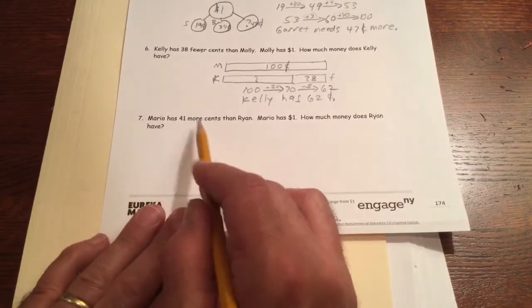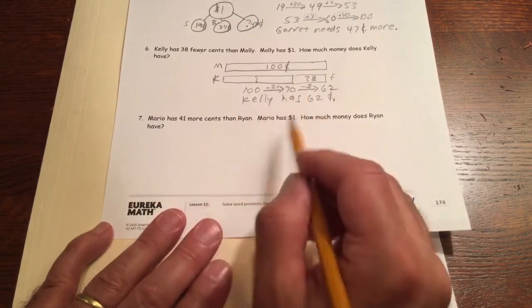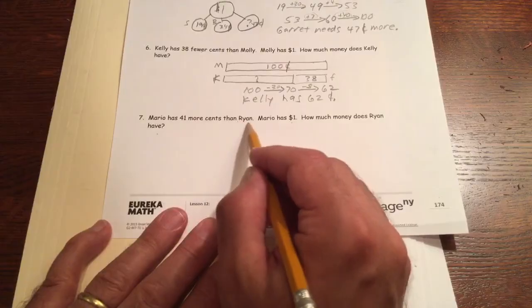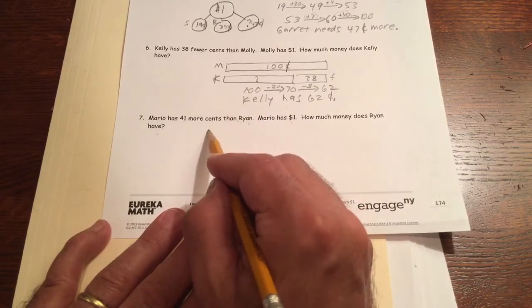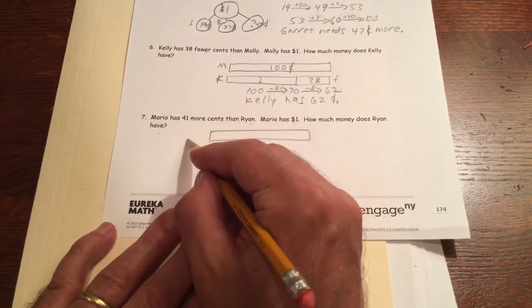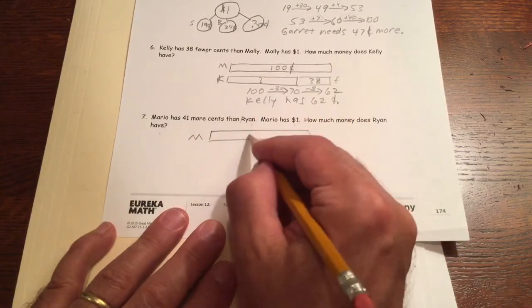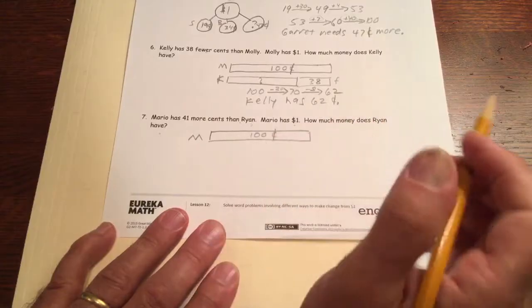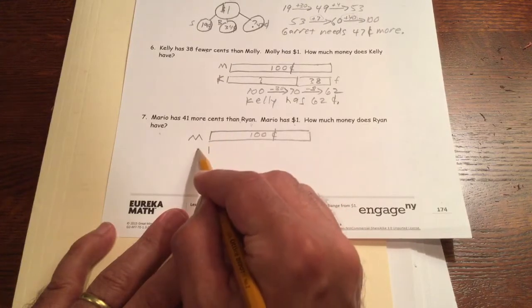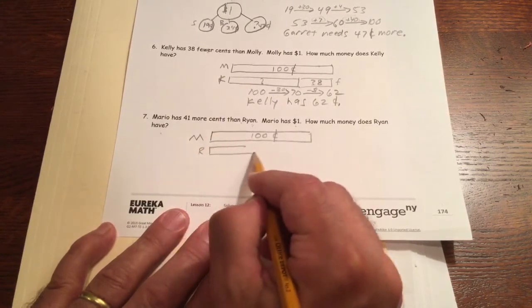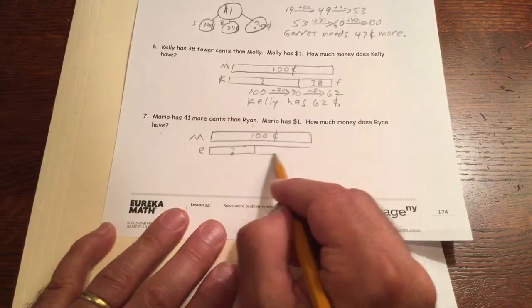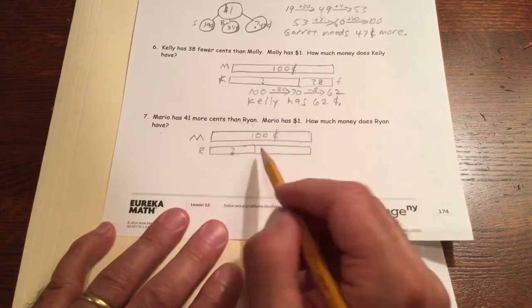Mario has 41 more cents than Ryan. Mario has a dollar. How much money does Ryan have? Mario has 41 more than Ryan, Mario has more. This is going to be similar to the one we just did. Here's Mario, and Mario has a dollar, a dollar is 100 cents. Here's Ryan. I don't know how much he has, that's what we have to find out. But we know that Mario is 41 cents more.